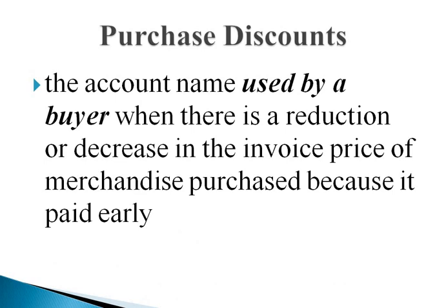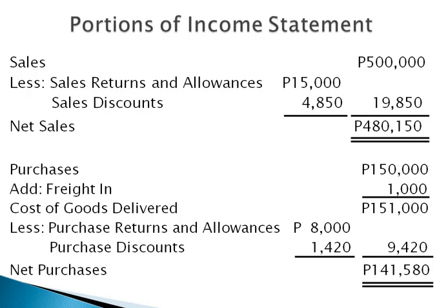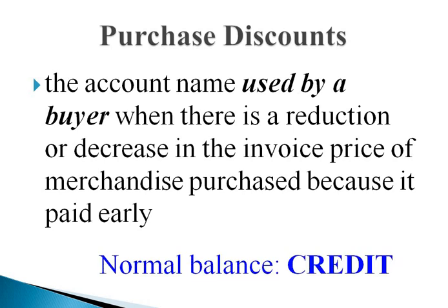The account name purchase discounts is used by a buyer when there is a reduction or decrease in the invoice price of merchandise purchased because the buyer paid early. Just like purchase returns and allowances, purchase discounts is shown in the income statement as a deduction from purchases. Therefore, its normal balance is also credit.